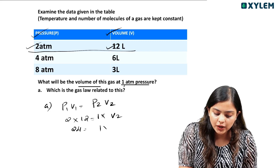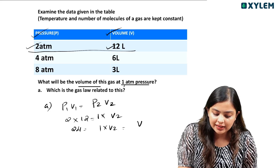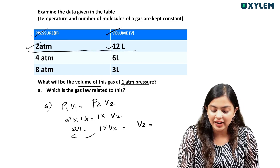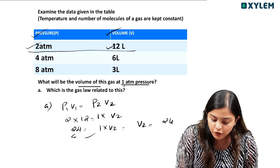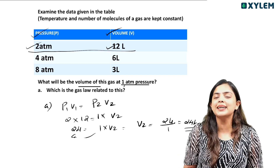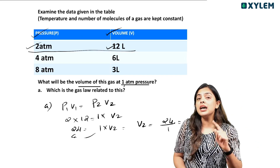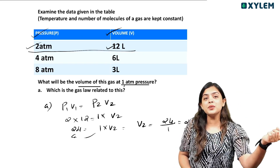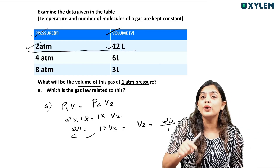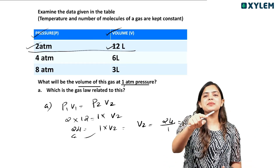Then, 24 is equal to 1 into V2. Then V2 is equal to 24 divided by 1, that is 24 liters. Now, at one atmospheric pressure, the volume is going to be 24 liters.